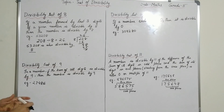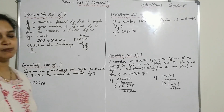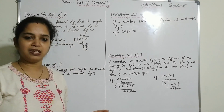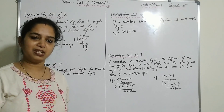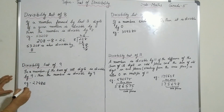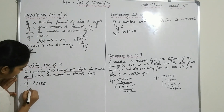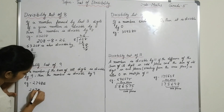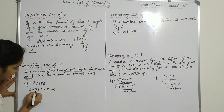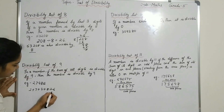Now, divisibility test for 9. How do we check if a number is divisible by 9? If the sum of all the digits is divisible by 9, then the number is divisible by 9. This is similar to how we found the divisibility test for 3. The same method applies for 9 as well.